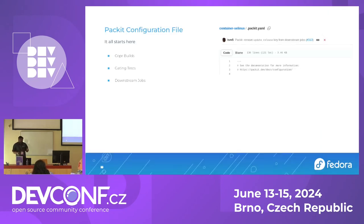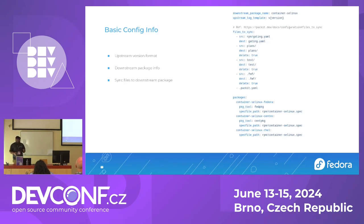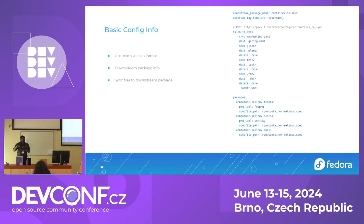So let's look at how it happens. Everything starts with the Packit configuration file. You have to talk to the Packit team to get permissions to add Packit to your repo. Once you get permission, you add a YAML file called .packit.yaml where you list all the jobs you want to run on changes. The basic config specifies the downstream package name in Fedora or CentOS Stream. The upstream tag template helps Packit identify your versioning scheme for bumping releases. Then there is the packages section, which creates identifiers used in subsequent sections for different distros. We'll come back to sync_to_files later.